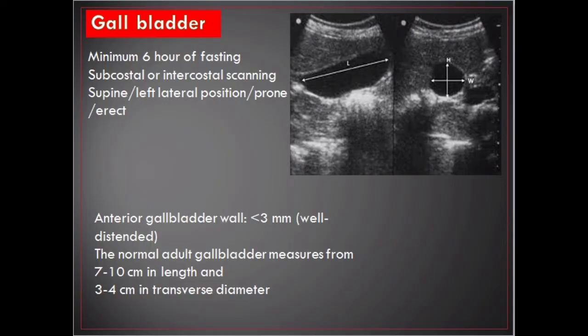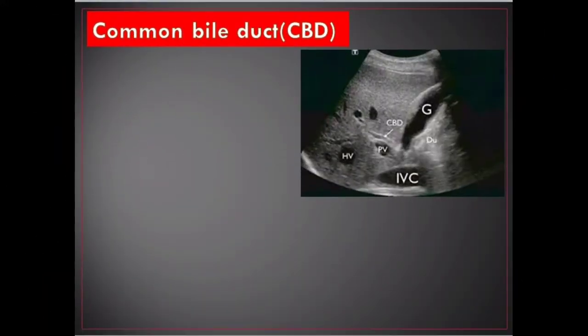The normal adult gallbladder measures from 7 to 10 centimeters in length and from 3 to 4 centimeters in transverse diameter. Common bile duct ultrasound is a primary tool for assessment of the structure of the biliary tree.